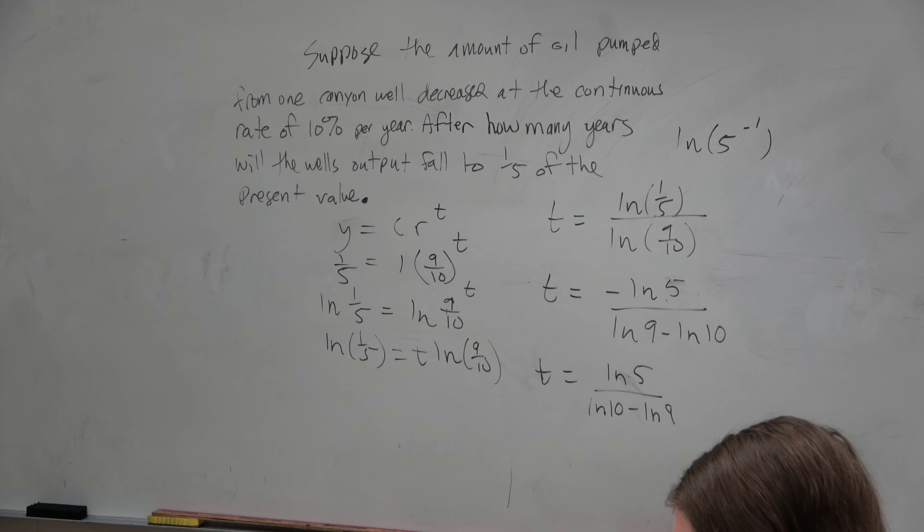So your rate is at 90% — you're decreasing by 10%. Now, if we take the ln of both sides: ln of 1/5 equals ln of (9/10) raised to t. We can bring the t in front: ln of 1/5 equals t times ln of 9/10. Solving for t: t equals ln(1/5) divided by ln(9/10).